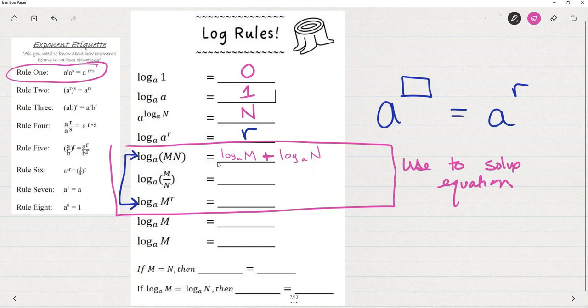When we have log base a of m times n, that's going to be equivalent to log base a of m plus log base a of n. So what we have is that the log of a product is equivalent to the sum of the two logs. Log base a of a product is equal to the sum of the two logs. And likewise, the log of a quotient is going to be equal to the difference of the two logs.